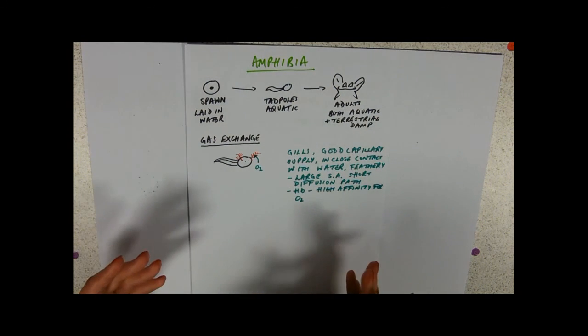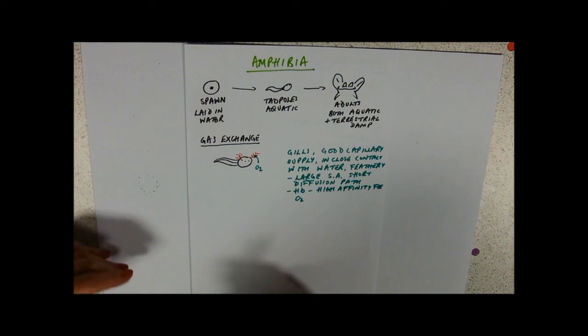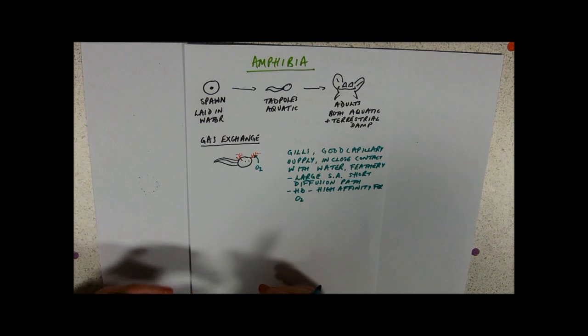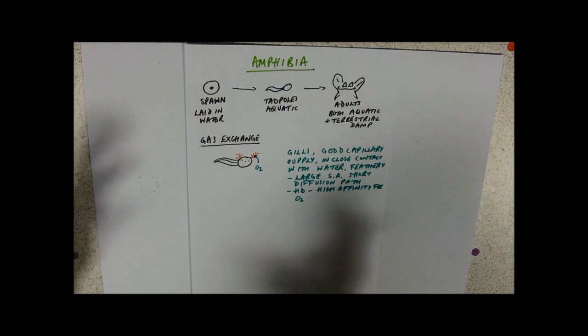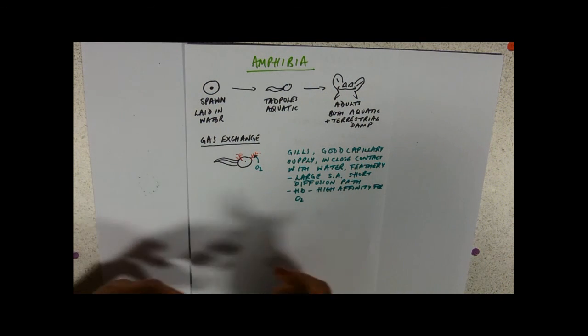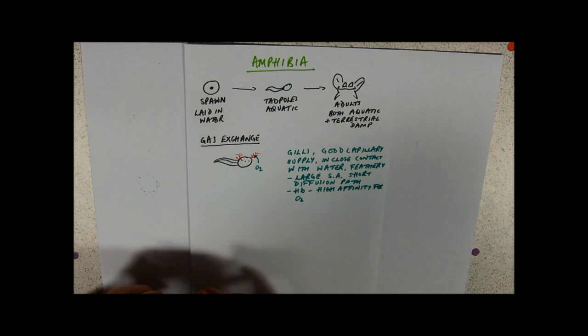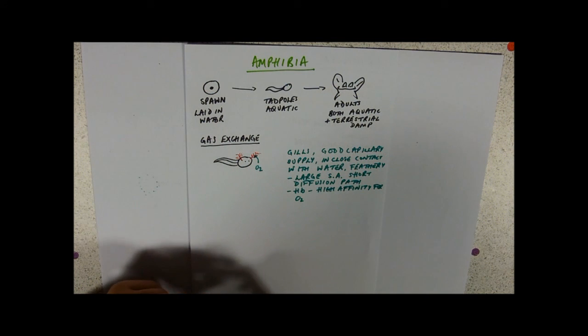Now it doesn't have any other specializations, so through its gills the blood's just flowing, it's in close contact with the water, and as the tadpole swims around into fresh, more oxygenated water, it sort of maintains its diffusion gradient that way, just by movements of water and tadpole. They might sort of waft around a bit, which would help the circulation.